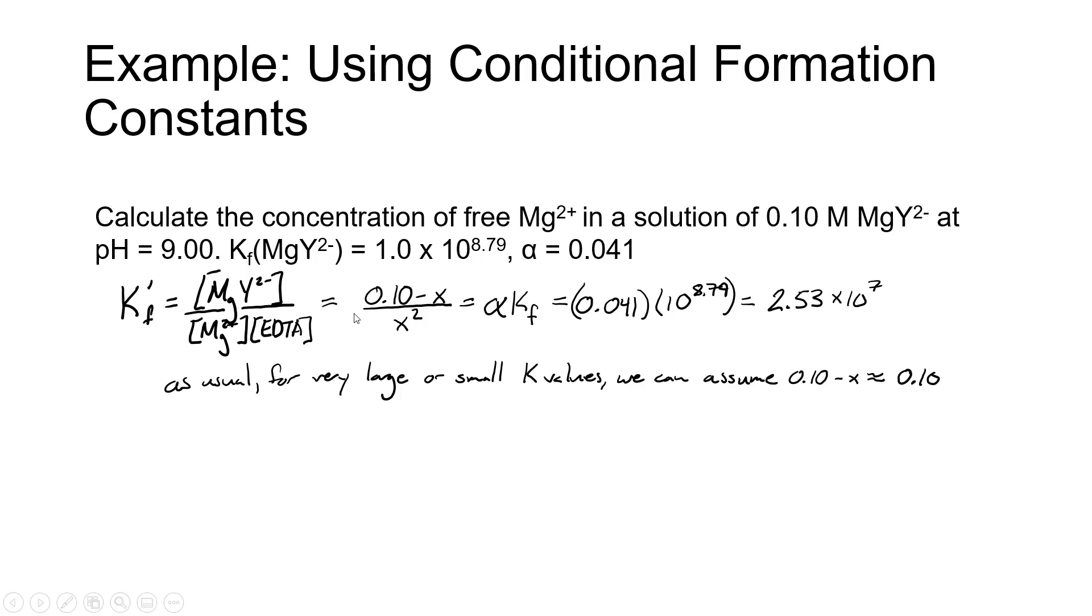So our conditional formation constant becomes, from the ice table, 0.1 minus X divided by X squared. The conditional equilibrium constant is equal to the alpha value times the formation constant.